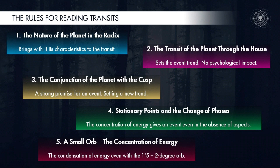Conjunction with the North Node weakens the planet; its effect is similar to the conjunction with Lilith — the person does not feel the planet. Conjunction with the South Node makes the planet very strong. If the conjunction with the South Node is afflicted, it means that the planet is strong and afflicted and will have a negative impact in predictions. If the planet is strong and harmonious, then it will not bring particular harm.